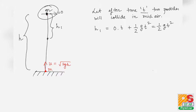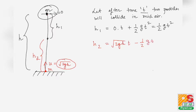Now let's calculate the distance covered by the second particle in the upward direction, called h2. Here u = √(2gh) (taking upward as positive), so h2 = √(2gh)·t − ½gt². Since the two particles collide, h1 + h2 = h.